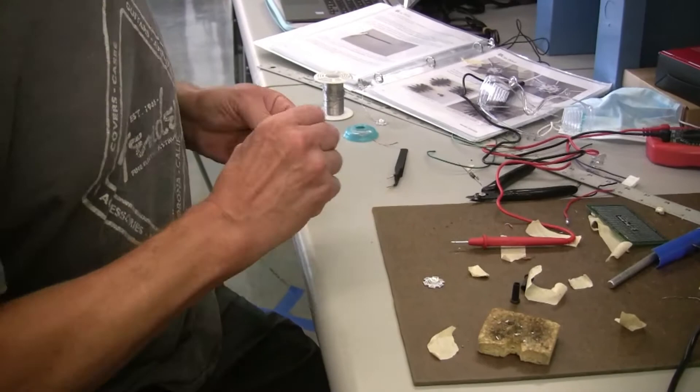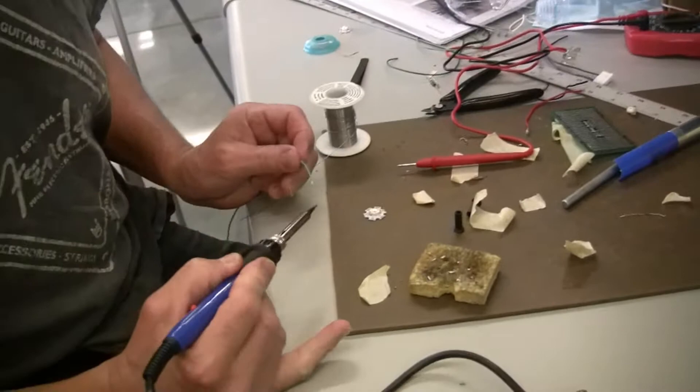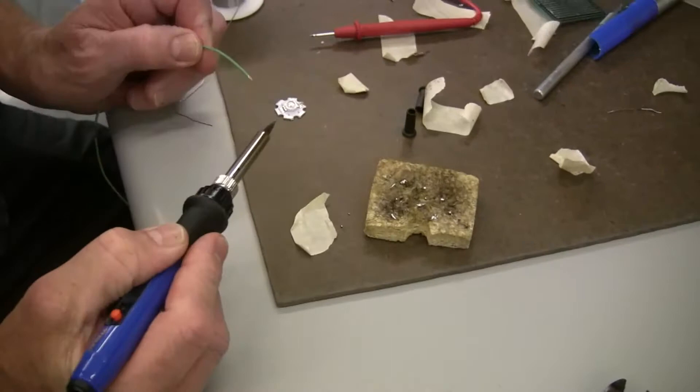Then I'm going to tin it. I'll prepare that by taking a little bit of solder and applying it to the end. First, I'll clean my tip. I'm going to apply a little bit of solder - always apply a